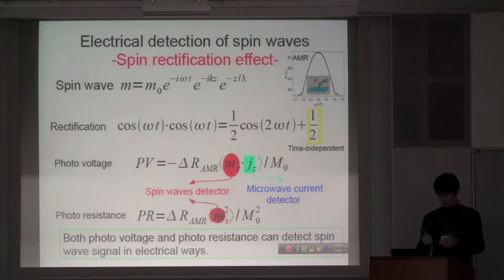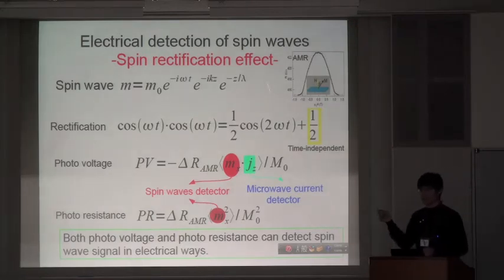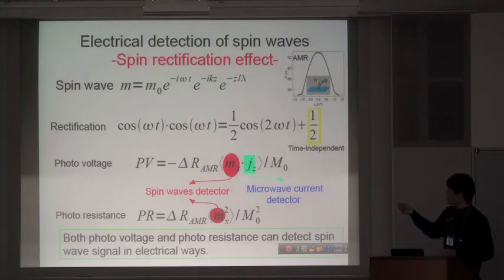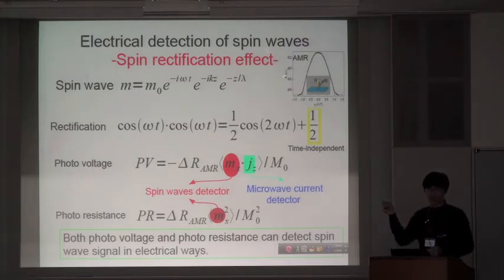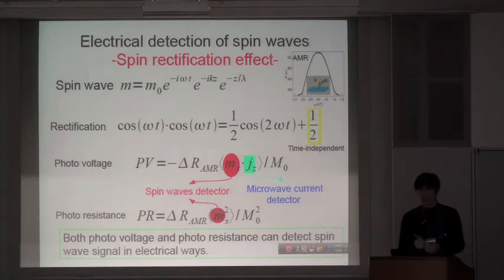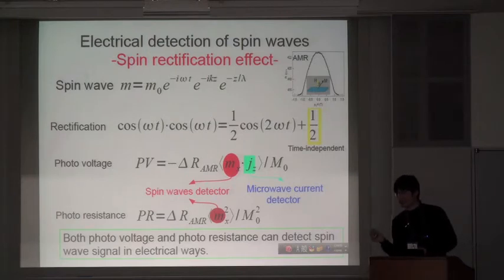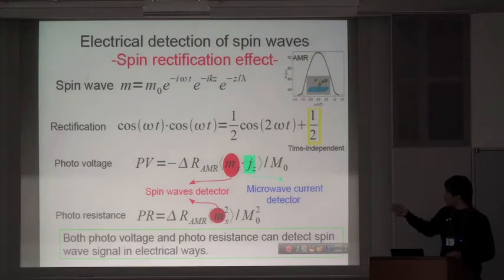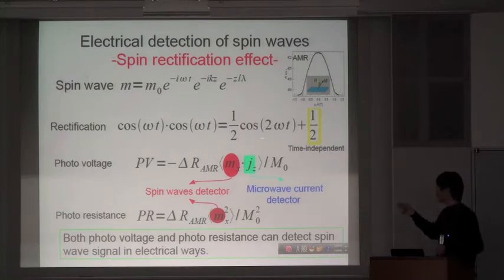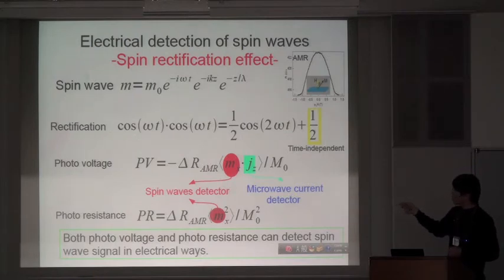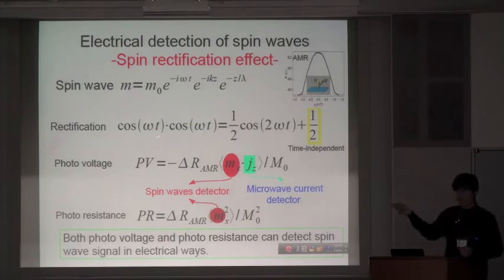I need maybe to spend a little bit time to introduce the spin rectification effect in a very simple way, like this. Spin wave, we always can write in this way, is magnetization precession with the frequency. And we know in ferromagnetic material that we have another important property that we call it anisotropic magnetoresistance. That means the resistance of this material depends on the orientation of the magnetization. Such a spin wave means the magnetization orientation is keep changing with the frequency of omega. That means based on the AMR effect, spin wave induced resistance change with the frequency of omega. And we all are familiar with this formula: two periodic signals product each other, and we can get a time-independent part.